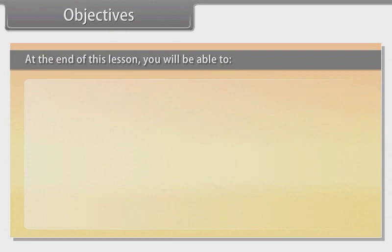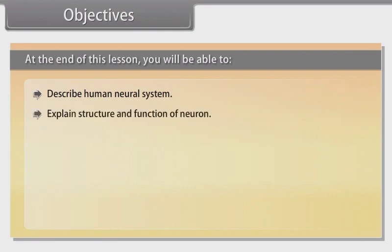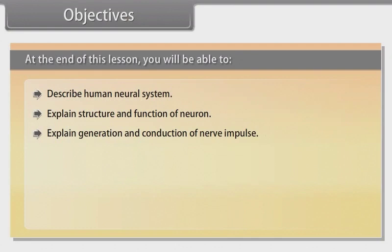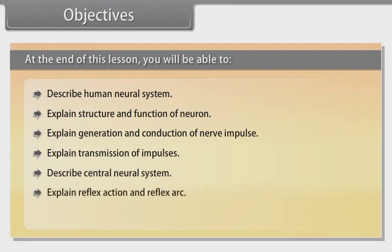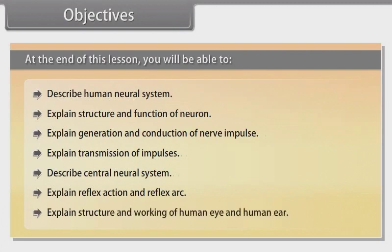At the end of this lesson, you will be able to: describe the human neural system; explain structure and functions of a neuron; explain generation and conduction of nerve impulse; explain transmission of impulses; describe the central neural system; explain reflex action and reflex arc; explain structure and working of the human eye and human ear.